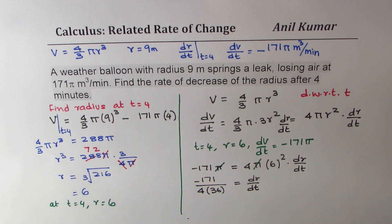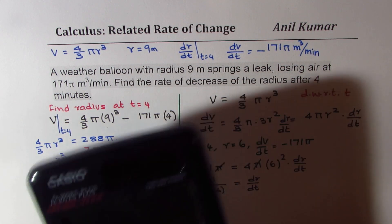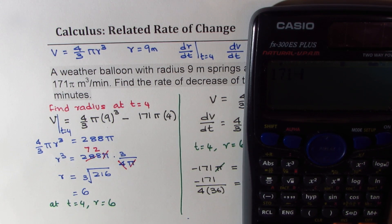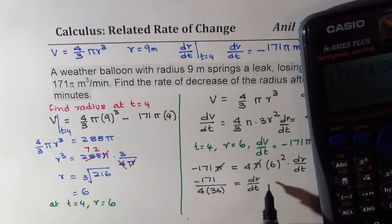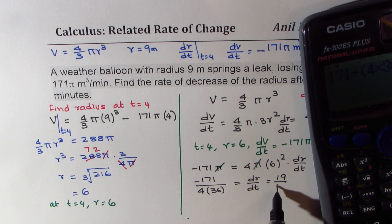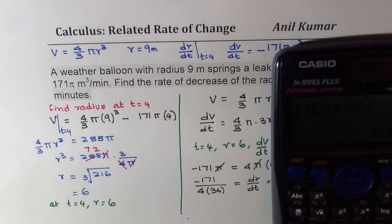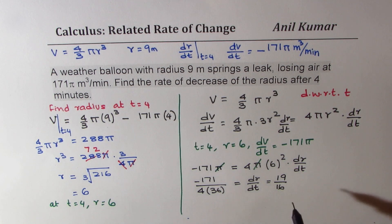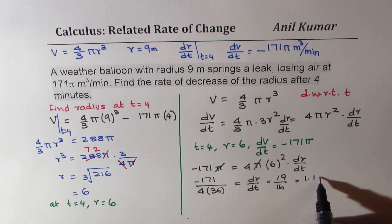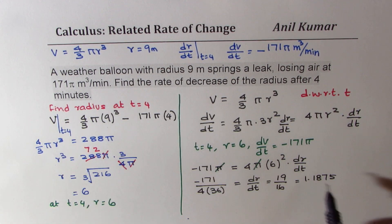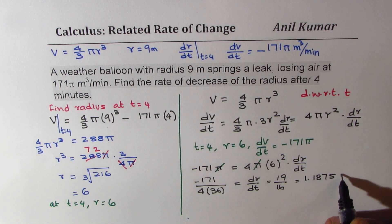So let's use calculator to find this answer. 171 divided by 4 times 36, that gives me 19/16. In decimals I could write this as 1.1875. Units being radius, so meters per minute. Negative shows decrease.